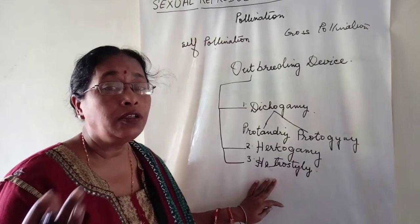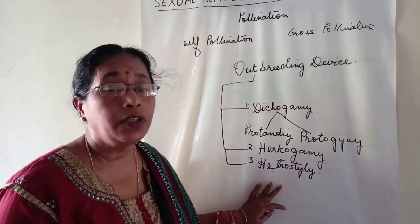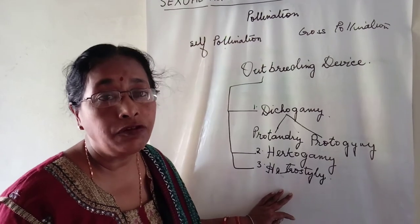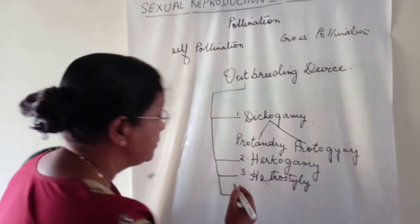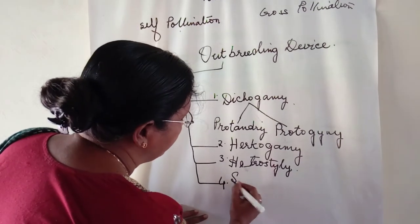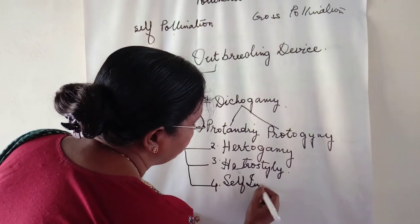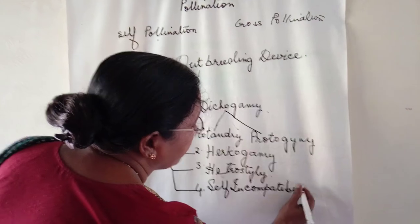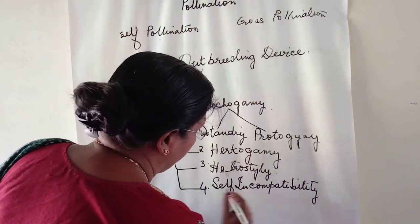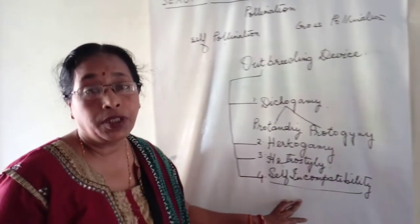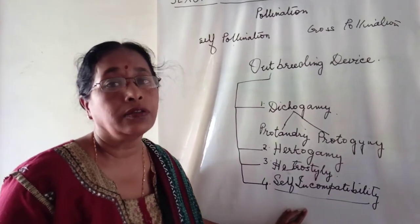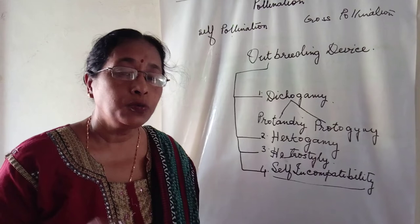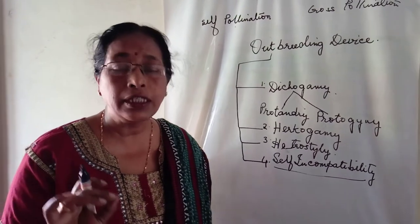In heterostyly, the length of the stigma and the style are different in different flowers of the same species, to avoid self-pollination. The next outbreeding device is self-incompatibility, in which the plant prevents the fusion of gametes in genetically similar plants.